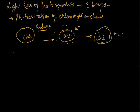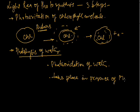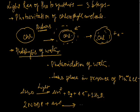Next step is photolysis of water, or photo oxidation of water. It takes place in the presence of magnesium and chloride ions. In the presence of light, 2H2O is converted into 4 hydrogen ions plus oxygen plus 4 electrons. 2NADP plus 4H combine to form 2NADPH2.